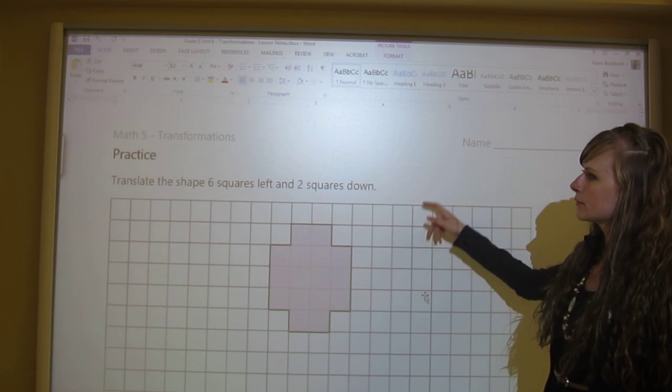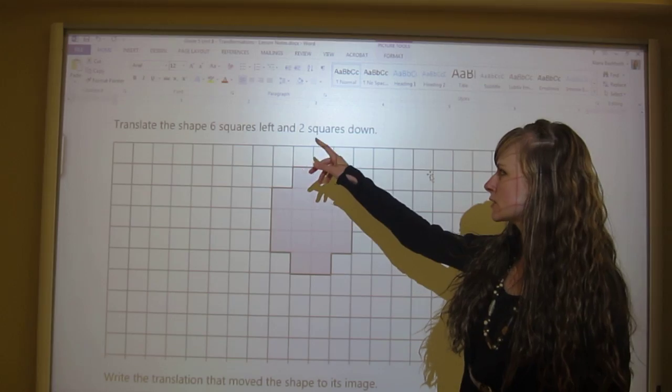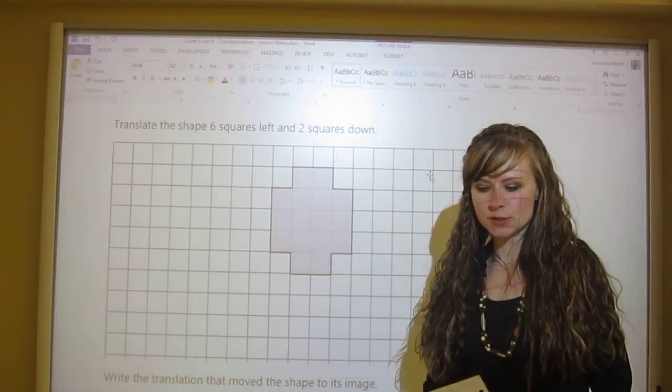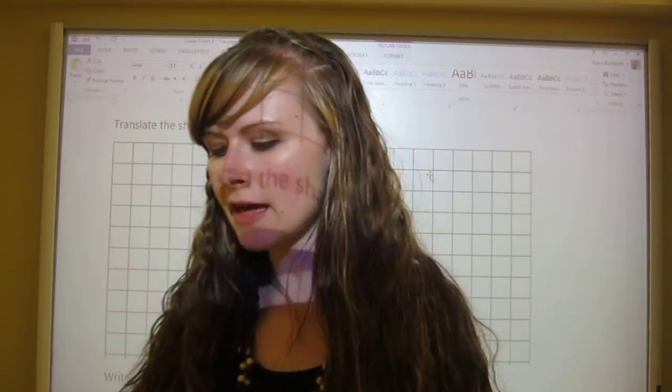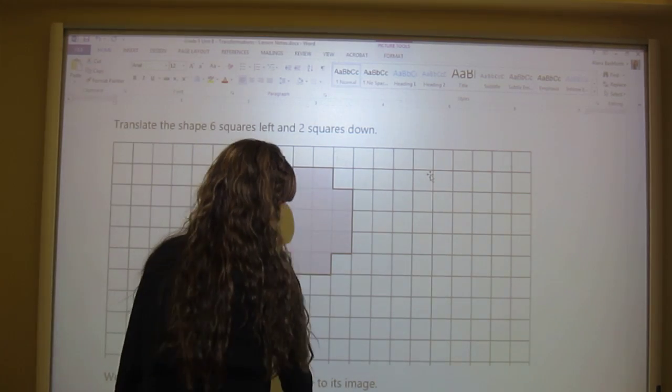Next up, we're going to practice. What you need to do is translate this shape six squares left and two squares down. Please pause the video now and try that out, and then play again once you're finished to see if you got the right answer.